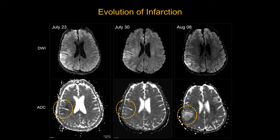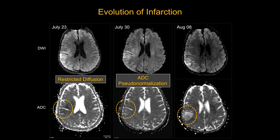Here is a nice example of a patient scanned every single week. On week one, bright signal on DWI and dark signal on ADC — restricted diffusion, acute infarction. Week two, bright signal on DWI and normal signal on ADC — ADC pseudonormalization, subacute infarction. Week three, bright signal on DWI and bright signal on ADC — T2 shine-through, chronic infarction.